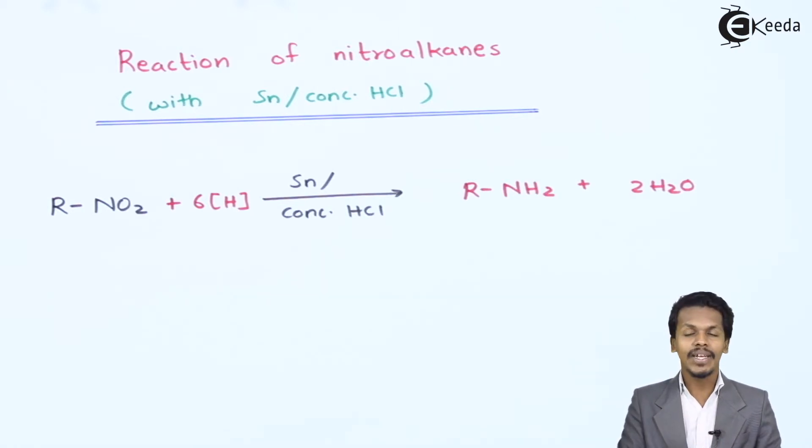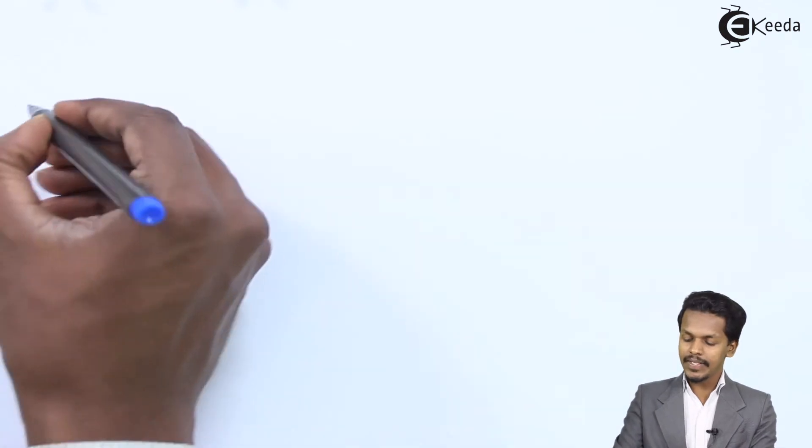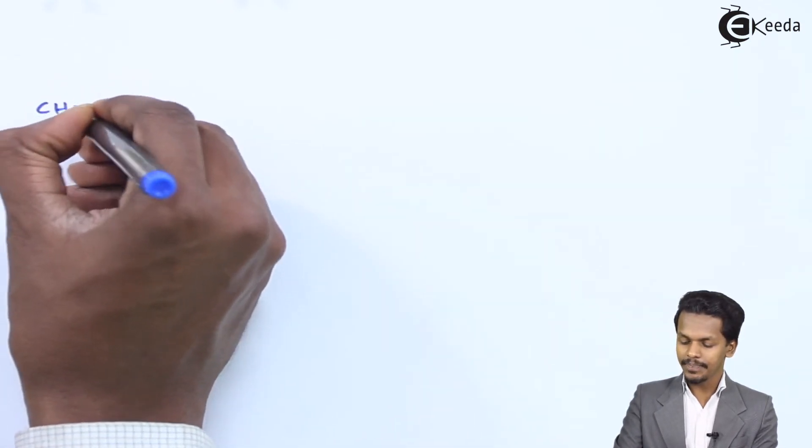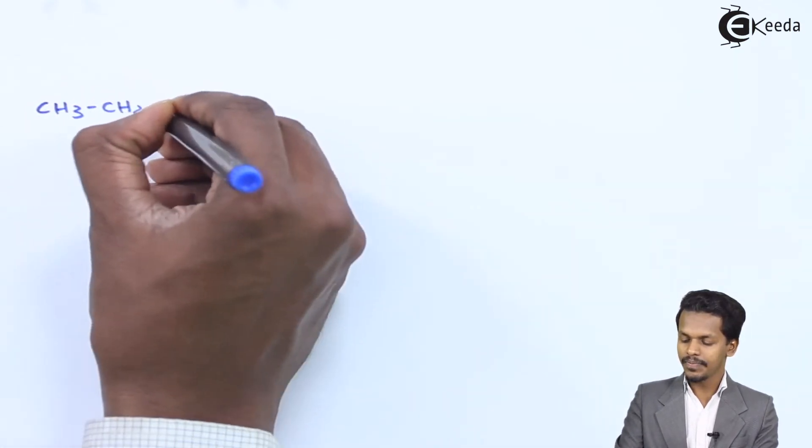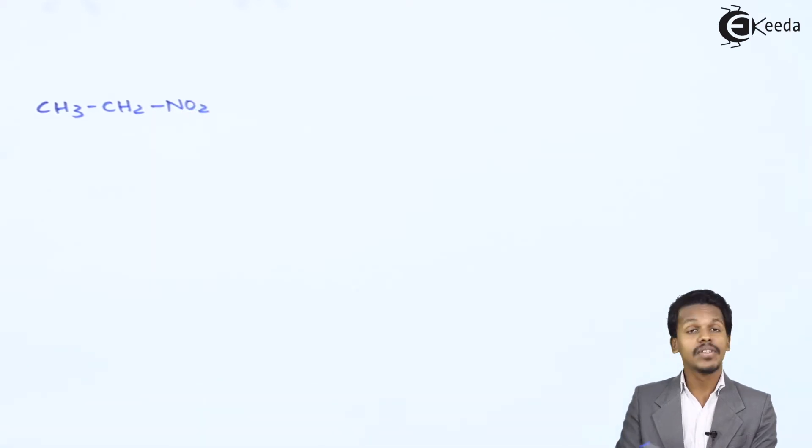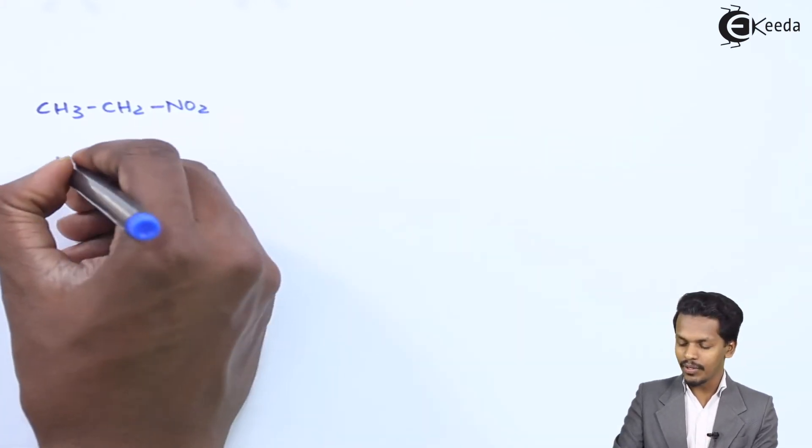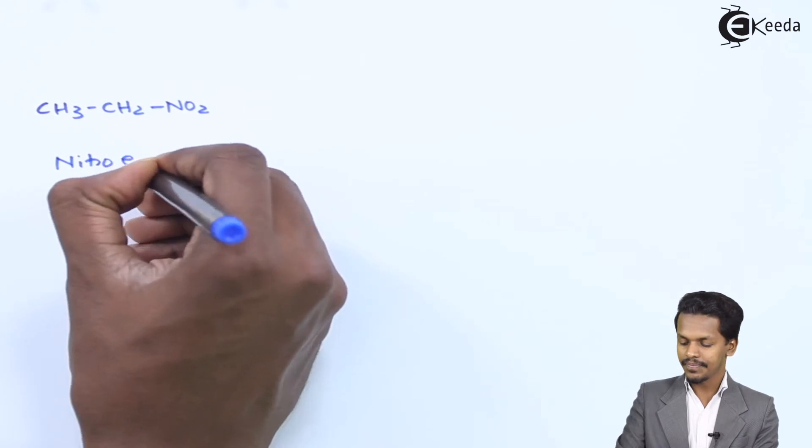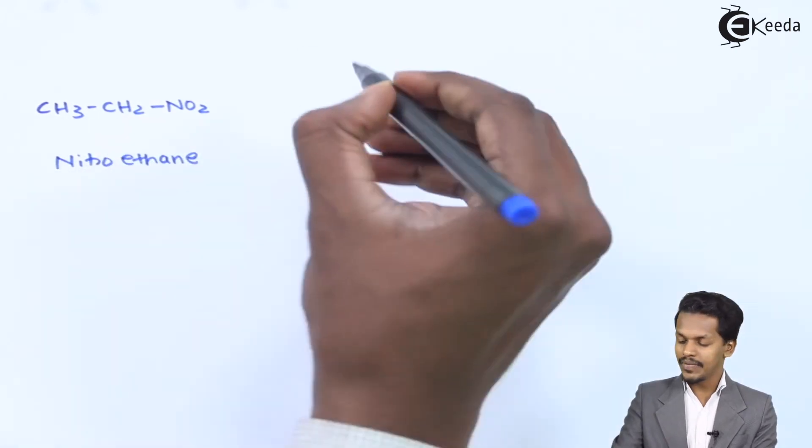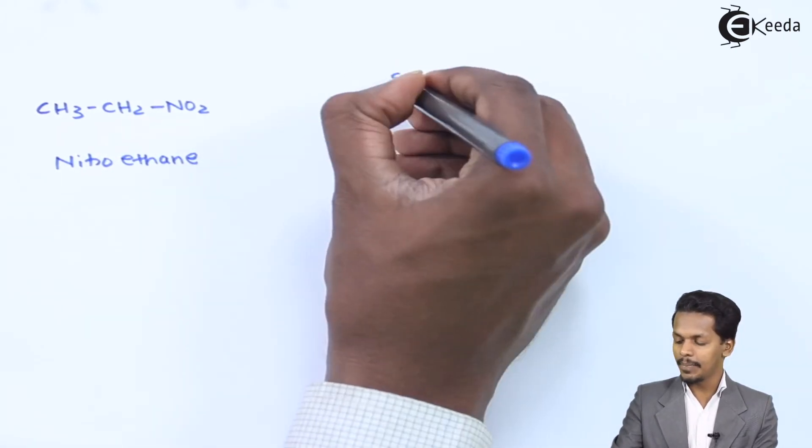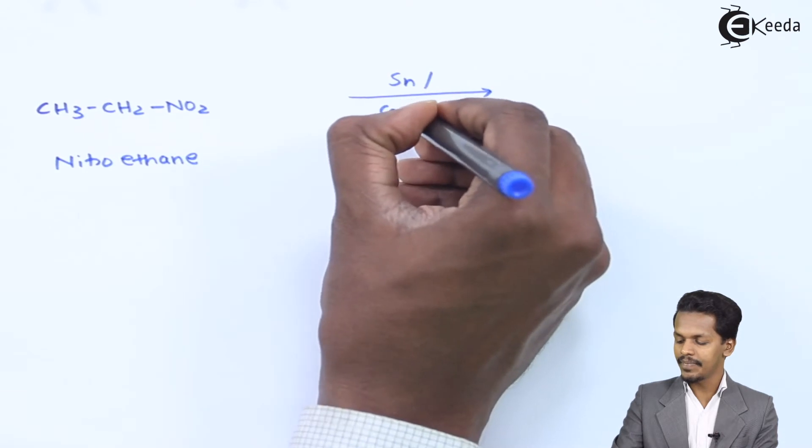Based on this, let me give you an example. Suppose we have considered CH3-CH2-NO2 which is nitroethane, and suppose we are reacting it with tin in presence of concentrated HCl.